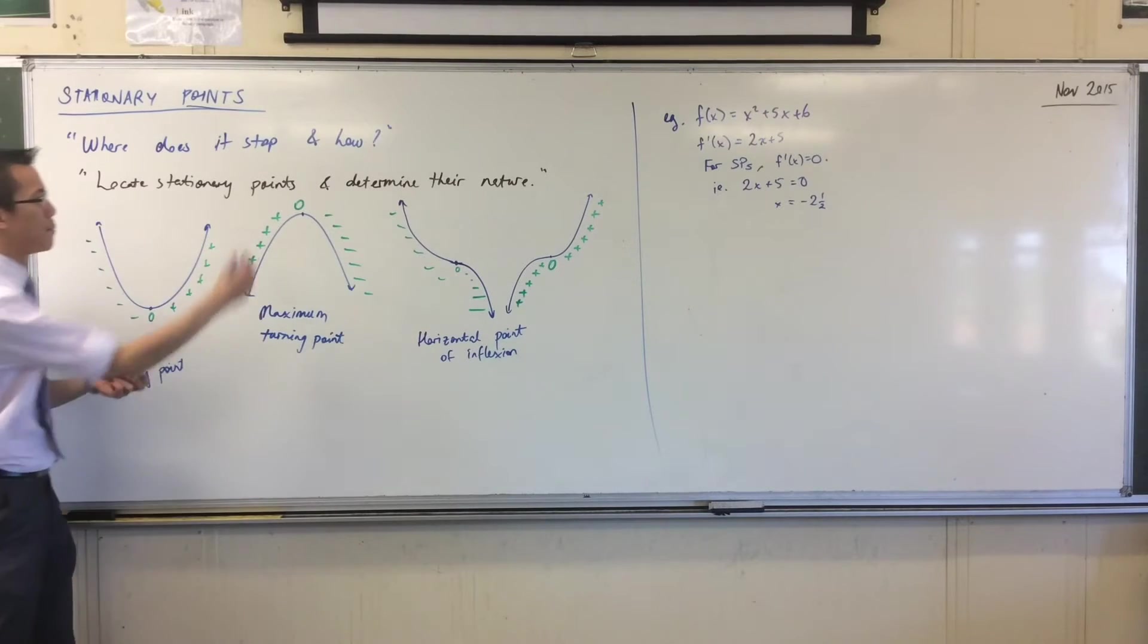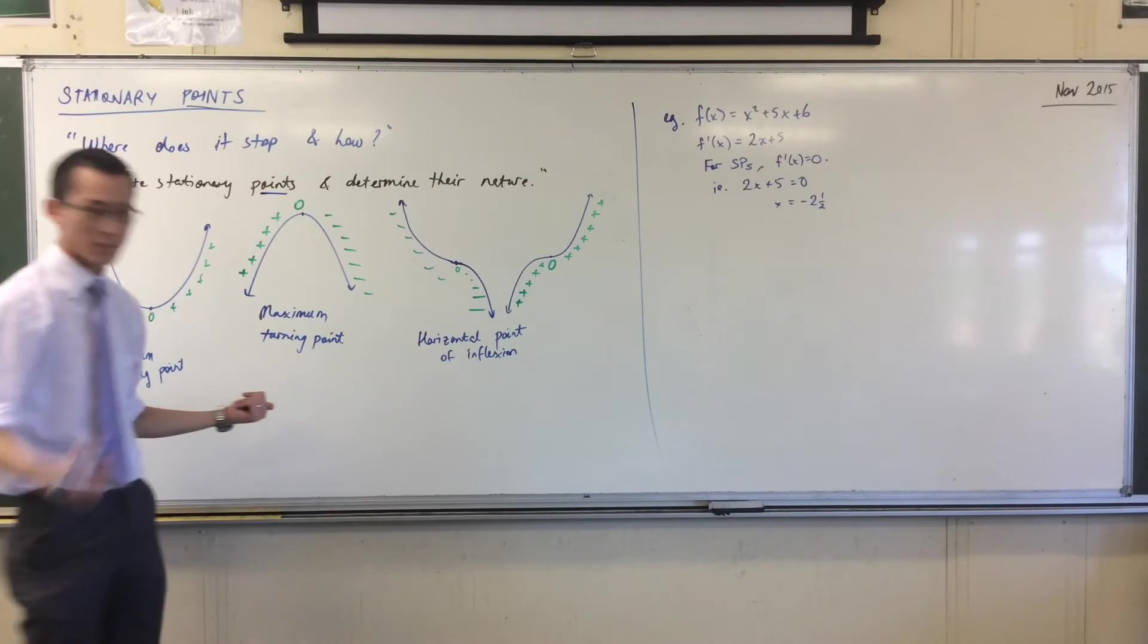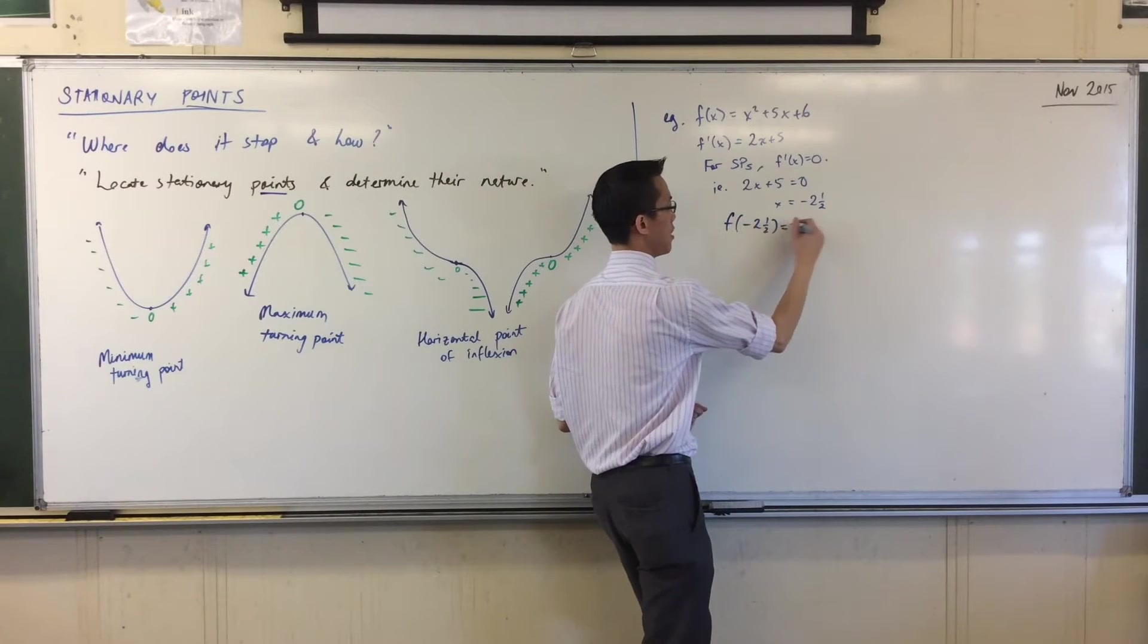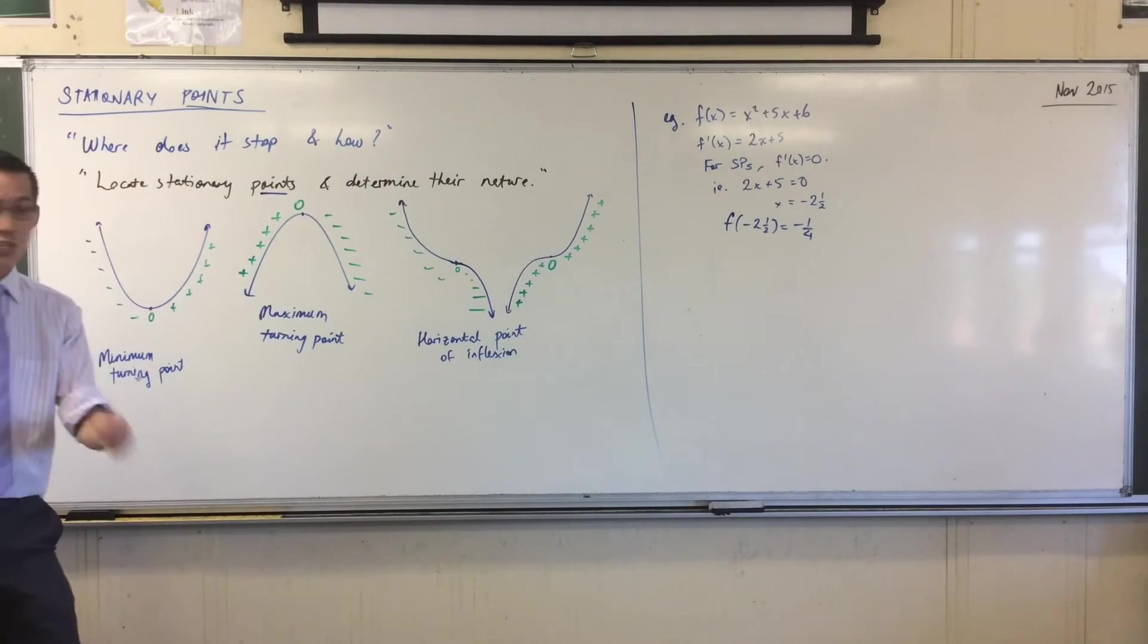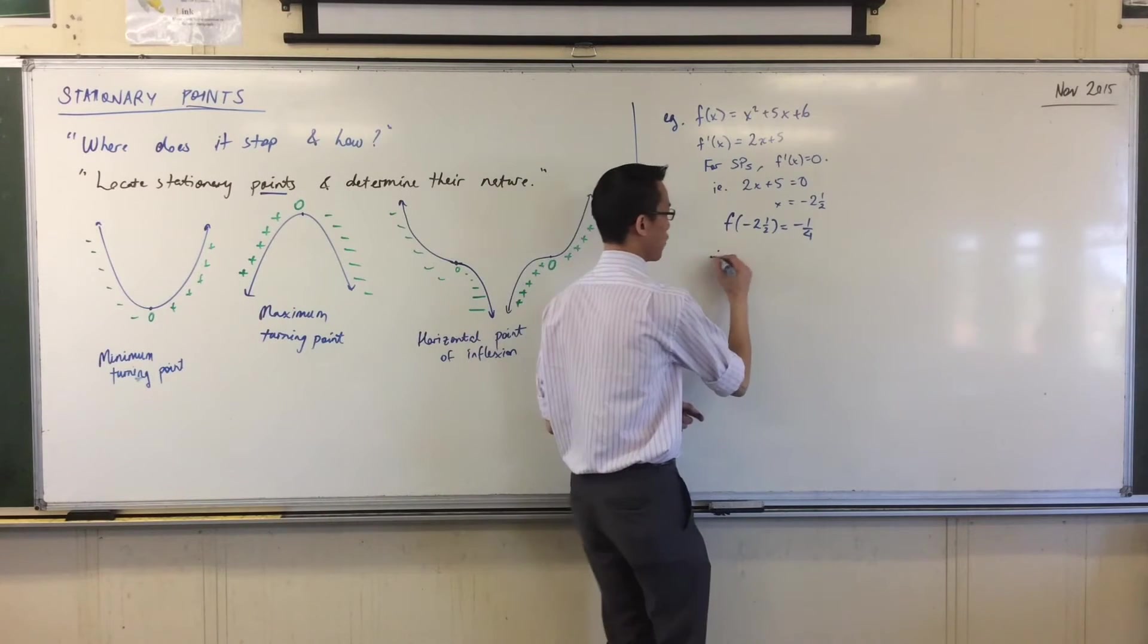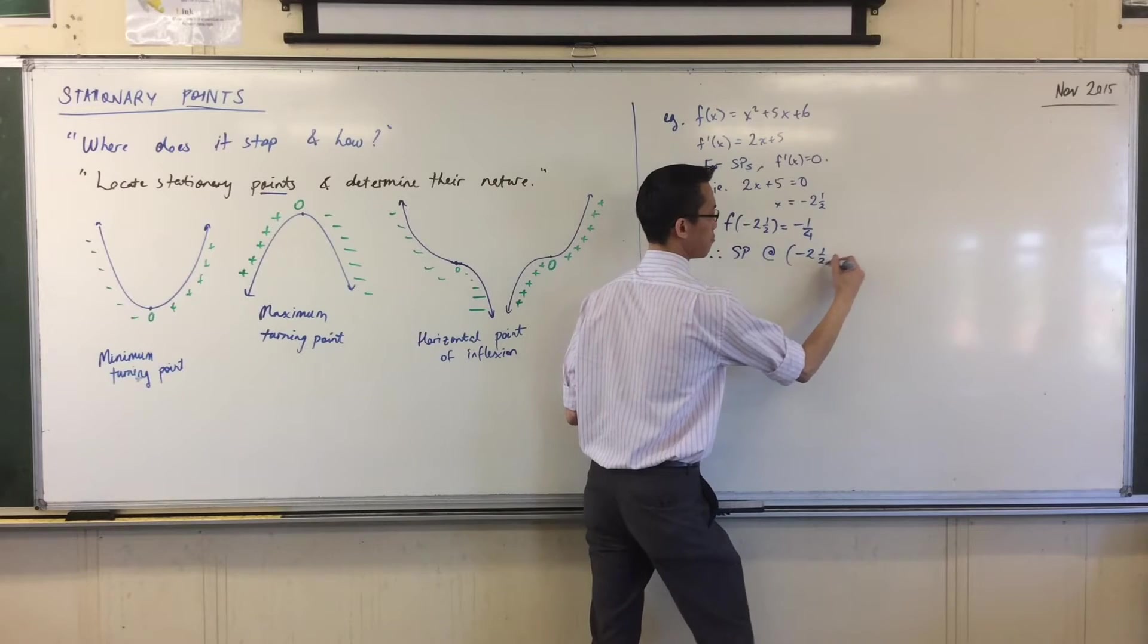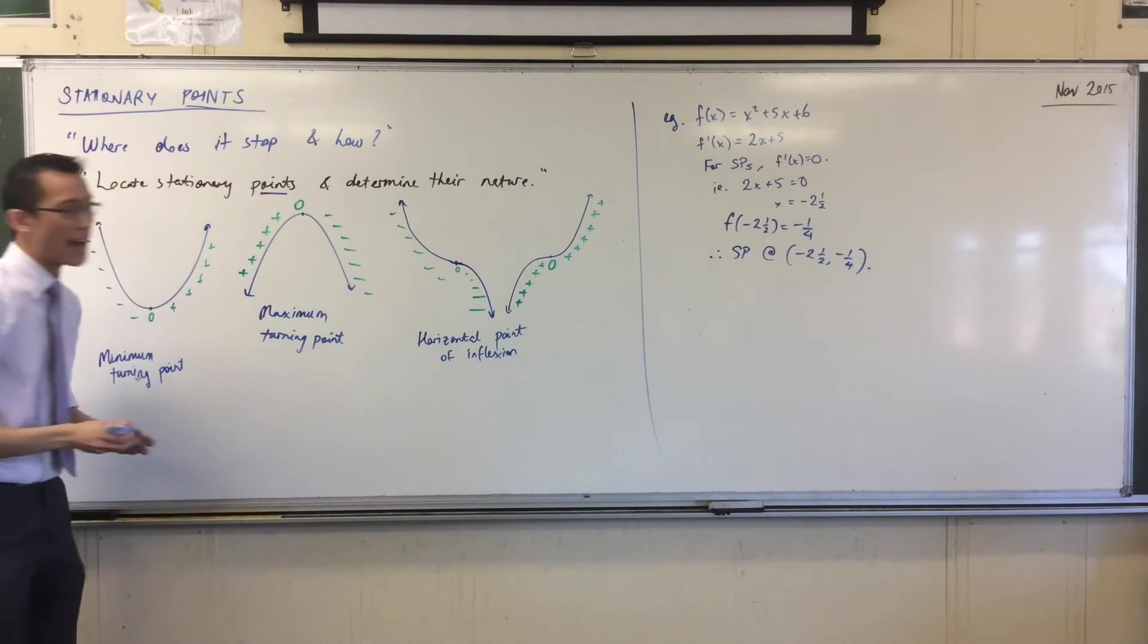I found an x coordinate, but a point has two coordinates, so what am I going to do now? I'm going to sub it back in. I'm gonna say f of negative 2.5 equals negative a quarter, because I just happen to know what that value is. So now I've got an x and I have its corresponding coordinate. I would say therefore there's a stationary point like that. Now I have not determined its nature here.